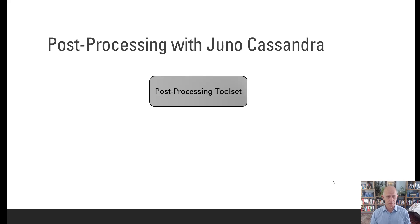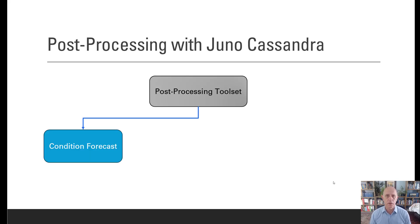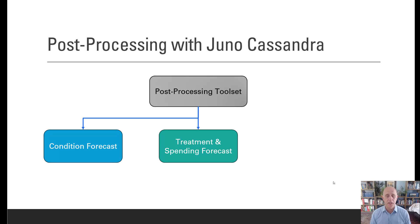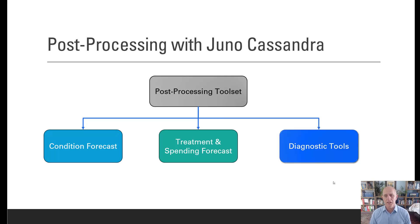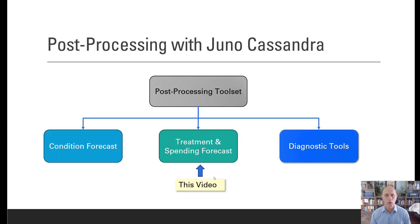Just to reiterate, the post-processing tools in Juno Cassandra Desktop fall into three categories. First, there is the analysis of the forecasted future network condition. Secondly, there is the analysis of the treatments and spending into the future. Thirdly, there is a set of diagnostic tools to help you debug and understand your model better, uncover anomalies, etc. — that will be the topic of a future video. In this video we are going to look specifically at the tools to help you analyze your treatments and your spending forecast.